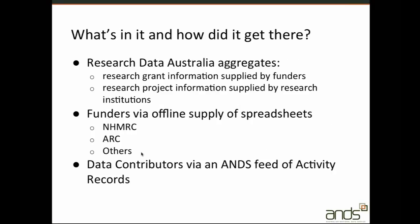The ANS registry aggregates lists of research grant descriptions provided by funders, and also aggregates lists of project descriptions provided by research institutions and agencies. Currently we have 45,000 grant descriptions just from the two major funders, ARC and NHMRC, and we also have 2,000 research project descriptions.